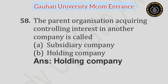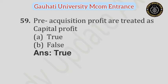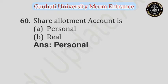Question number 58: The parent organization acquiring controlling interest in another company is called as — Option A: Subsidiary company, Option B: Holding company. Answer is Holding company. Question number 59: Pre-acquisition profits are treated as capital profit — Option A: True, Option B: False. Answer is True. Question number 60: Share allotment account is — Option A: Personal account, Option B: Real account. Answer is Personal account.